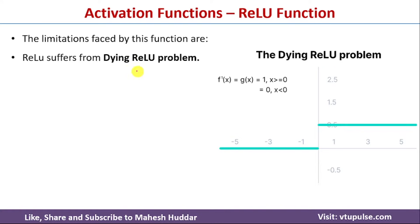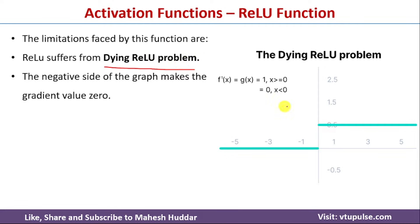ReLU suffers from a problem known as the dying ReLU problem. Some neurons are active and some are inactive at a given point of time, and there are situations in which a neuron that is inactive will never become active again. Such a problem is known as the dying ReLU problem. Looking at the derivative of ReLU: f'(x) = 1 if x ≥ 0, and 0 if x < 0.